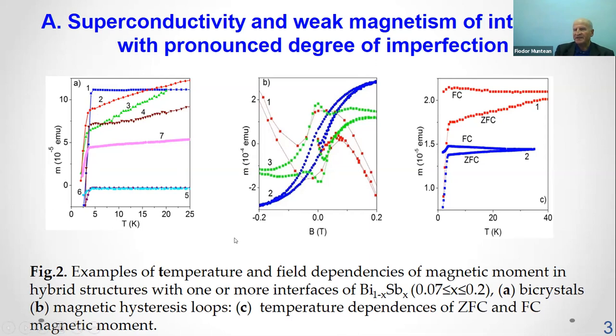the superconducting critical temperature of central layer decrease to value of the adjacent layers. Typical magnetic hysteresis loop of bismuth antimony hybrid structures are given in figure 2b. Three distinct types of magnetic loops are clearly highlighted.